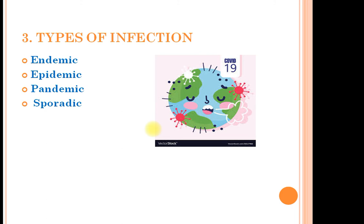Infections can also be classified based on the number of cases appearing in a particular time interval. Endemic infections are those which are always present at a particular location — the number of infected persons can be less, but the infection is persistently present. Epidemic refers to a sudden outbreak where a large number of cases are seen within a short time interval. Pandemic is the epidemic in a broader sense — the epidemic is seen at different geographical locations. Sporadic infections are those in which very few, limited cases — just one or two — are seen.